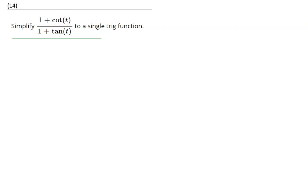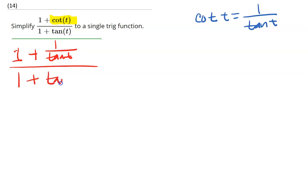So for this one, I don't want to take it all the way back to sines and cosines. I think it would be easier if we consider that cotangent of t is equal to 1 over tangent t. If we make this substitution right here for this cotangent, then we'll have all of our terms in regards to ones and tangents. So I'm going to go ahead and make that substitution here. So I get 1 plus 1 over tangent t divided by 1 plus tangent t.